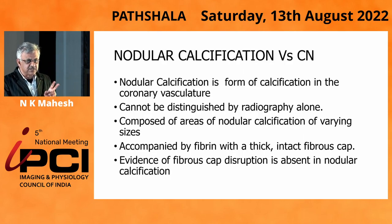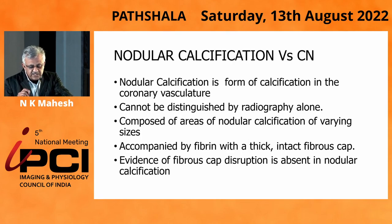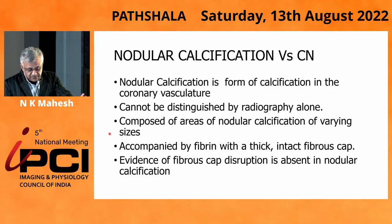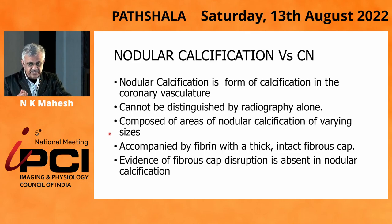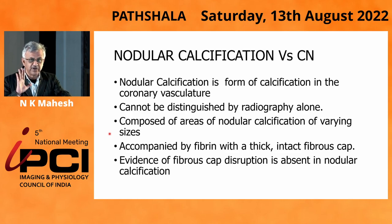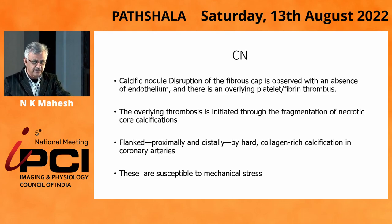There are two terms which are always misused. One is nodular calcification, another is a calcified nodule. Nodular calcification is a form of calcification in the coronary vasculature which cannot be distinguished with radiography alone, composed of areas of nodular calcification of varying sizes with a thick, intact fibrous cap. Evidence of fibrous cap disruption is absent. Till the time your fibrous cap is intact, it is a nodular calcification. The moment your fibrous cap gets broken, it is called a calcified nodule. These two terminologies cannot be used interchangeably.